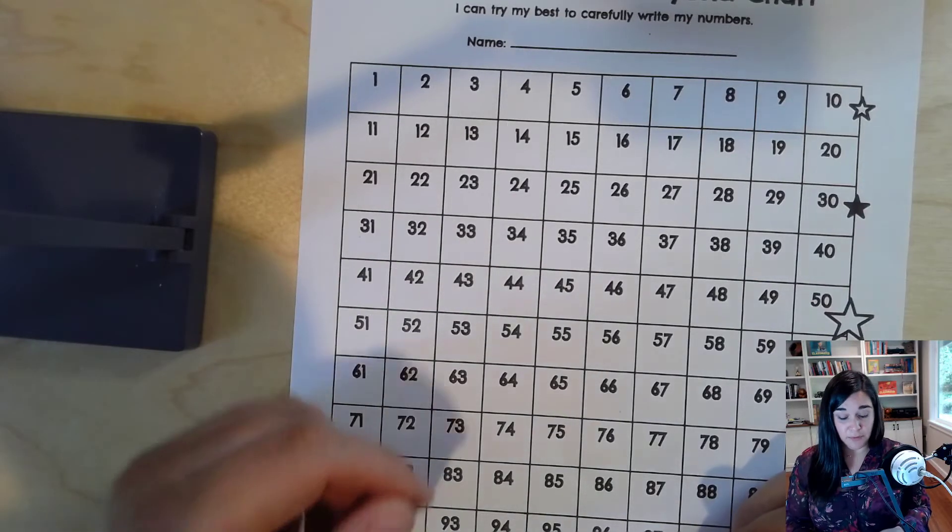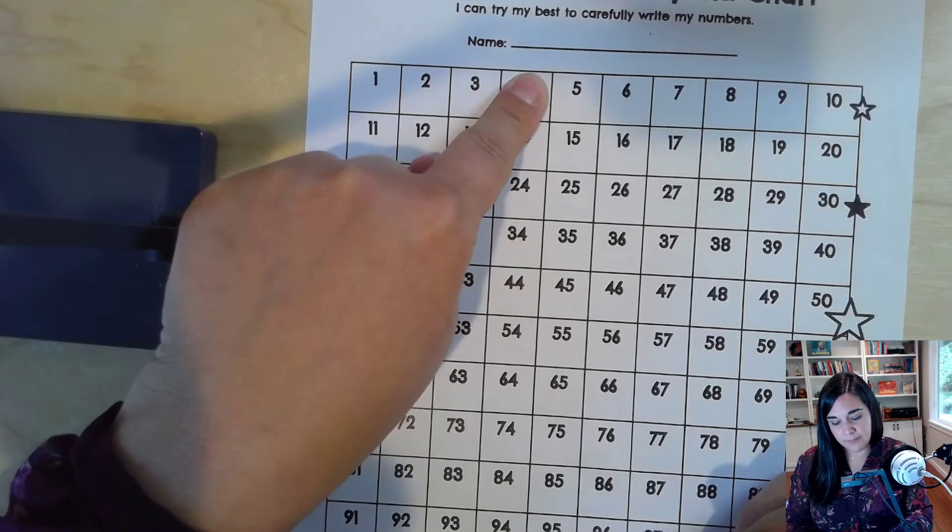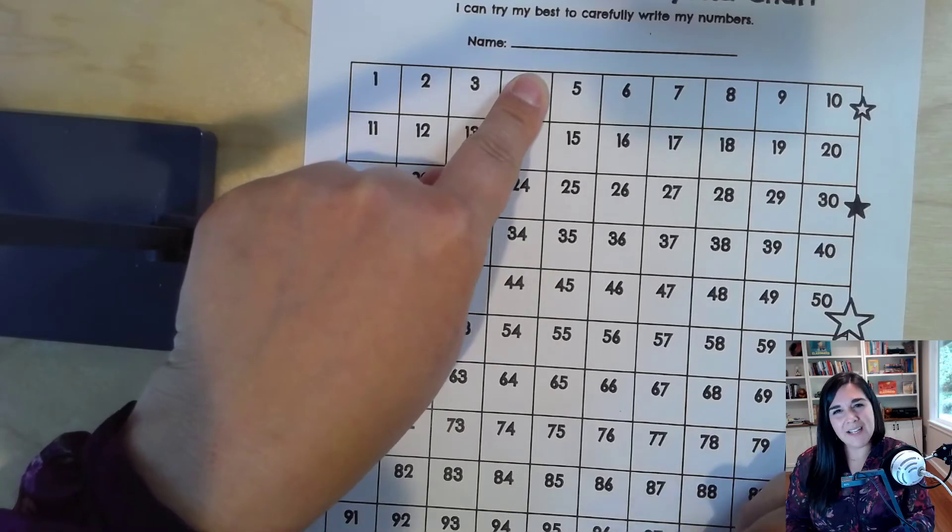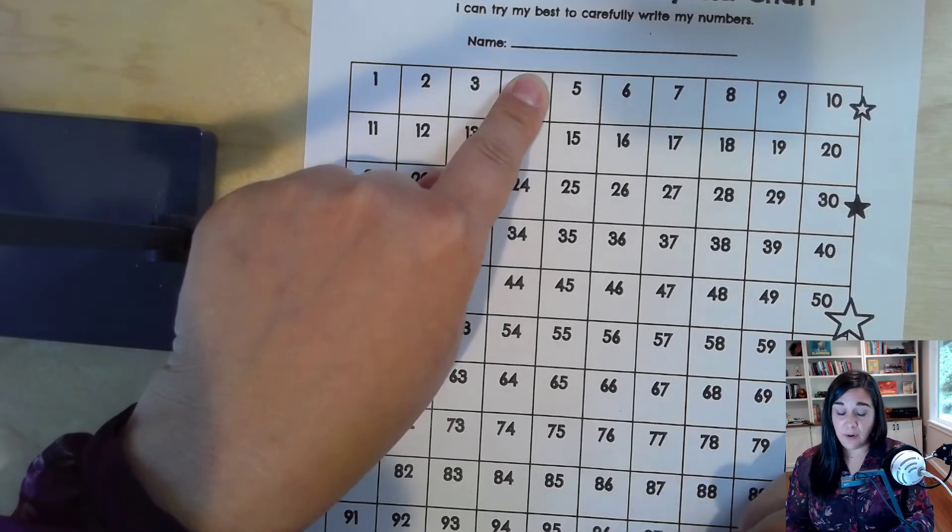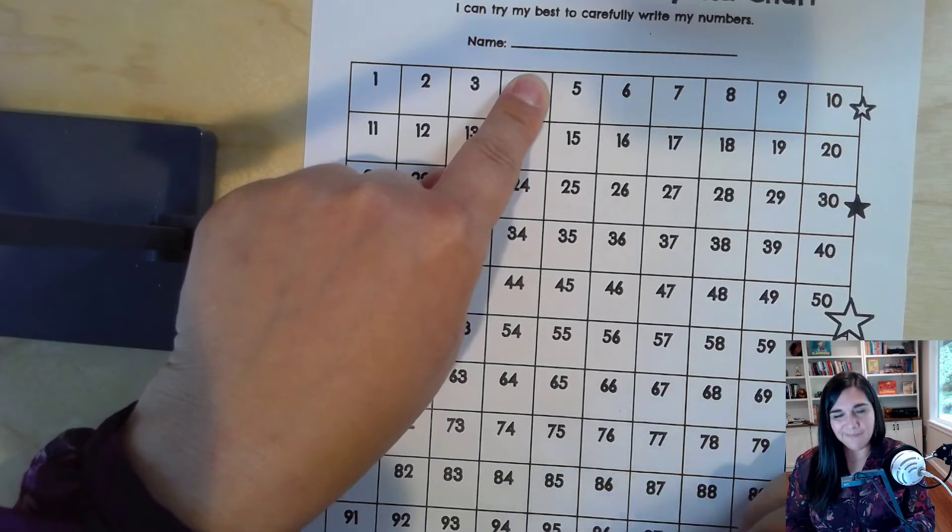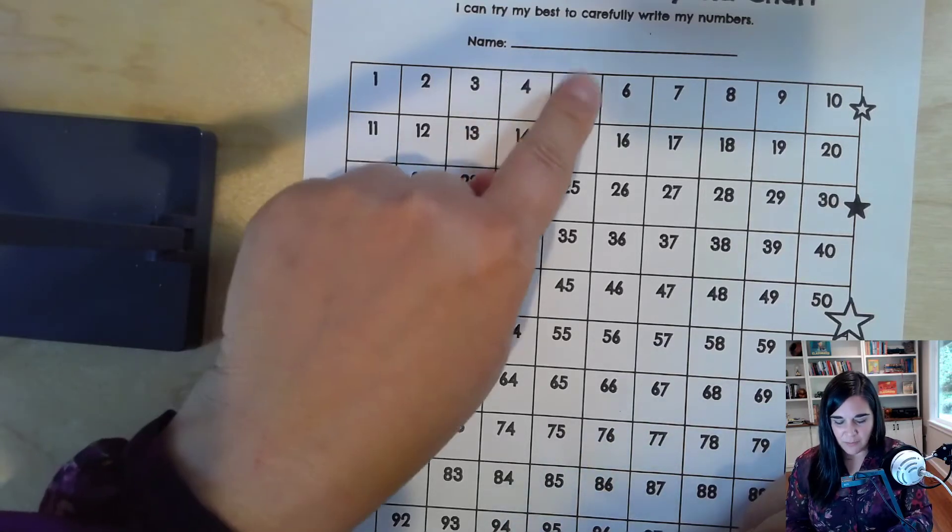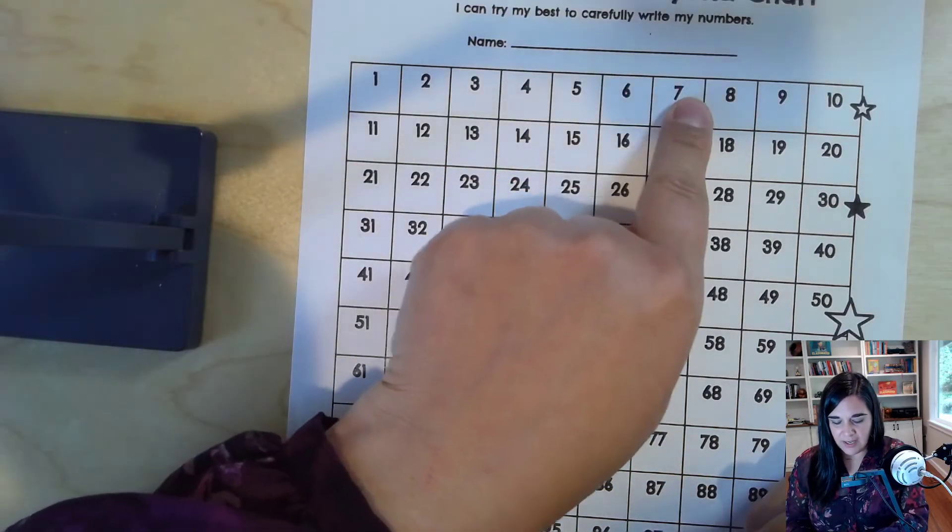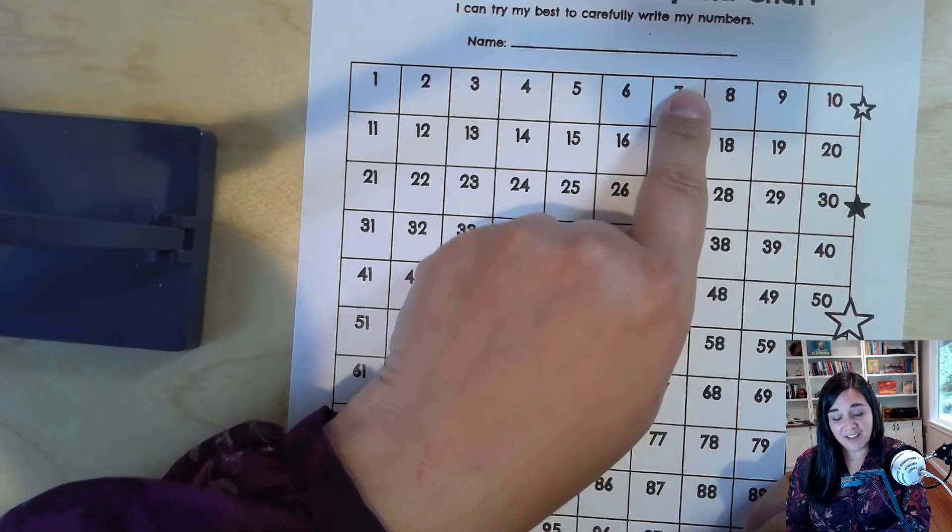All right. Let's go back to that number 4. 4. What is 3 more than 4? You can move your finger if you want. 1, 2, 3. 3 more than 4 is 7.